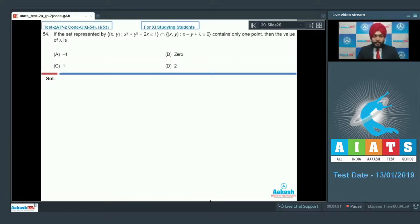Let us move on to 54. Question number 54 says that the set represented by first set is x, y such that x square plus y square plus 2x less than equal to 1, which means the boundary of a circle and the interior points of a circle. The equation of circle C is x square plus y square plus 2x minus 1 equals 0. So either the boundary or the interior portion of this particular circle.